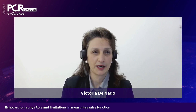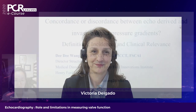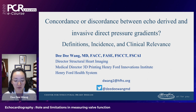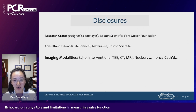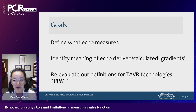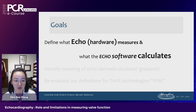Thank you Phil. Now we continue with Dr. Didi Wang, an interventional imager who will speak about the concordance or discordance between echo-derived and invasive direct pressure gradients. We're going to go over concordance or discordance between echo and cath. The relevant disclosure is I do echo and CT and I used to do cath. In the next 10 minutes we'll define three main goals: what echo really measures and the meaning of gradients, then re-evaluate whether we have the right terms for TAVR technologies. We have to understand first that echo is a hardware, and what it measures is different from what the software actually calculates.